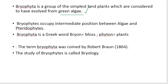Bryophyte is a Greek word. Bryon means moss, phyton means plants. So bryophyte means moss plants. The term bryophyte was coined by Robert Braun in 1864.